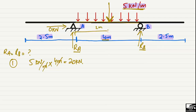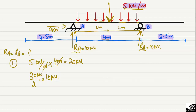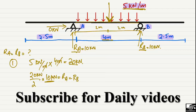Now divide the 20 kN by 2 because we have two supports, Ra and Rb. 20 kN divided by 2 gives 10 kN. So each support reaction equals 10 kN. This is the easiest way to find support reactions when you have symmetric loading on the beam — the load is symmetric across the supports, so we multiply 5 kN/m by 4 m to get the total load and divide by 2.